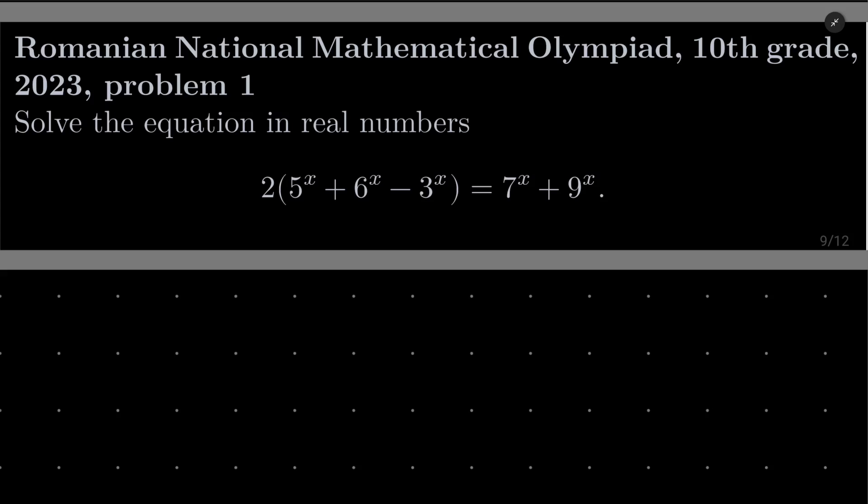We wish to solve the following equation in real numbers: 2 times, in parentheses, 5 to the power of x plus 6 to the power of x minus 3 to the power of x, equals 7 to the power of x plus 9 to the power of x.